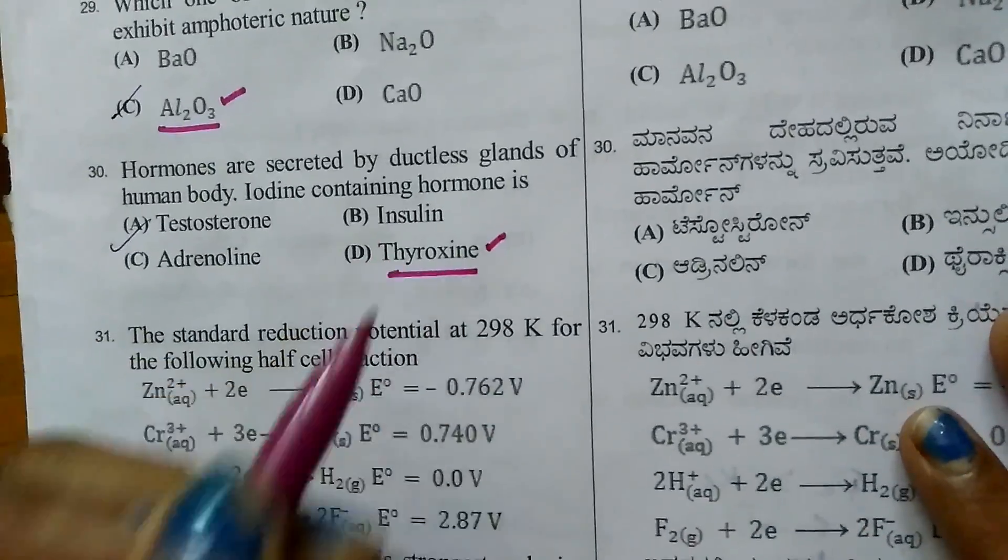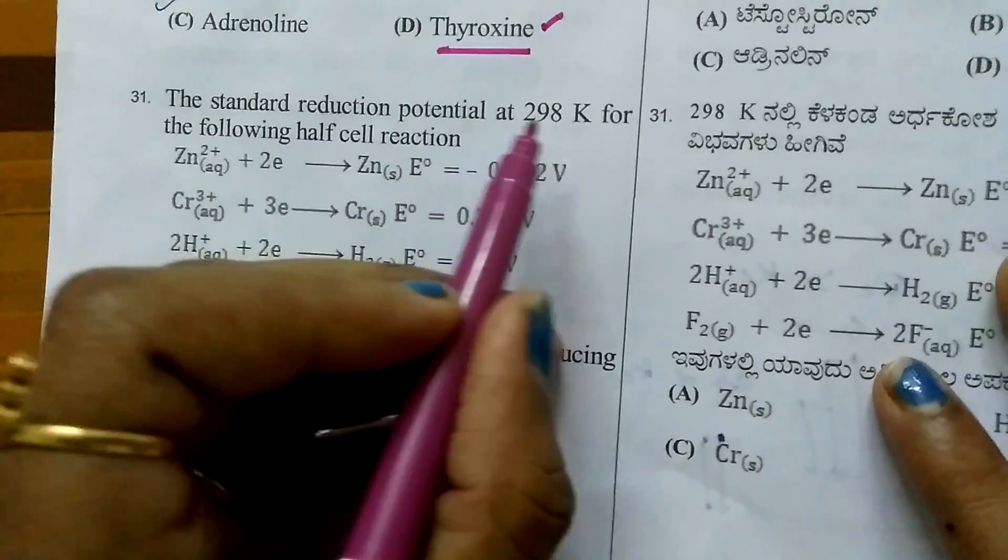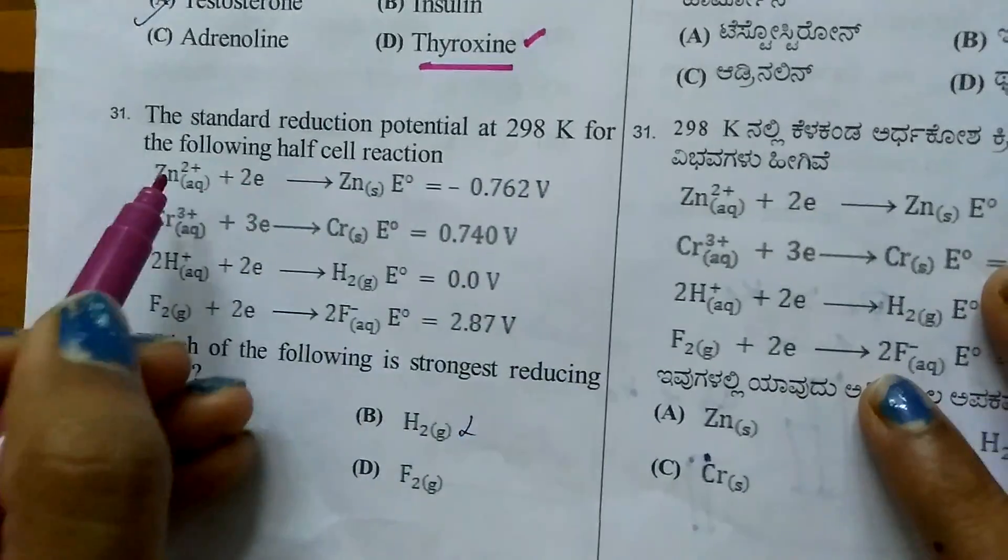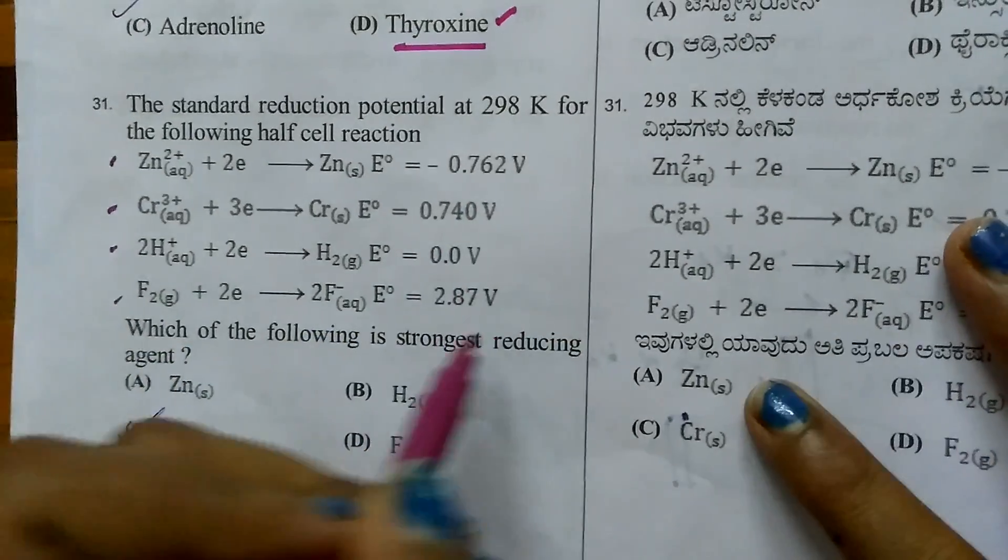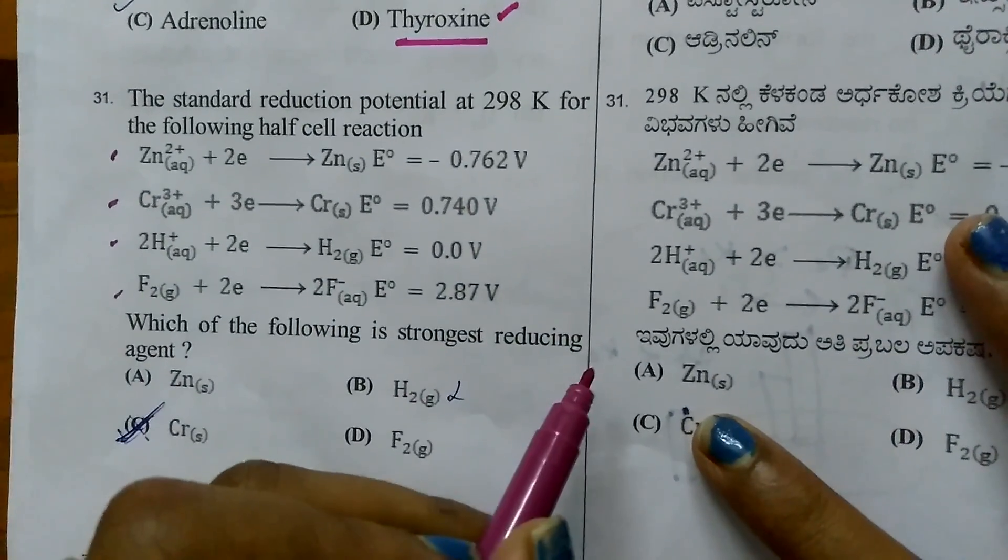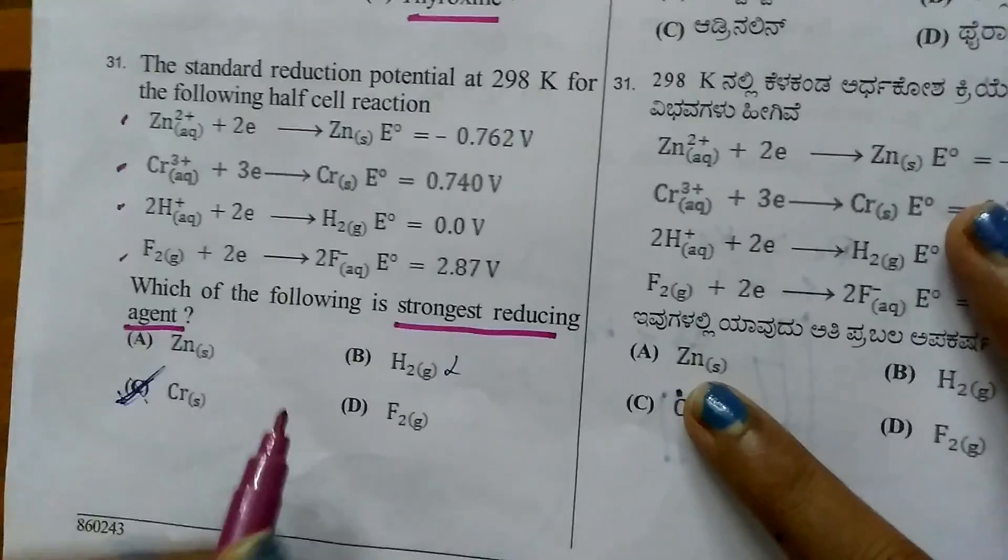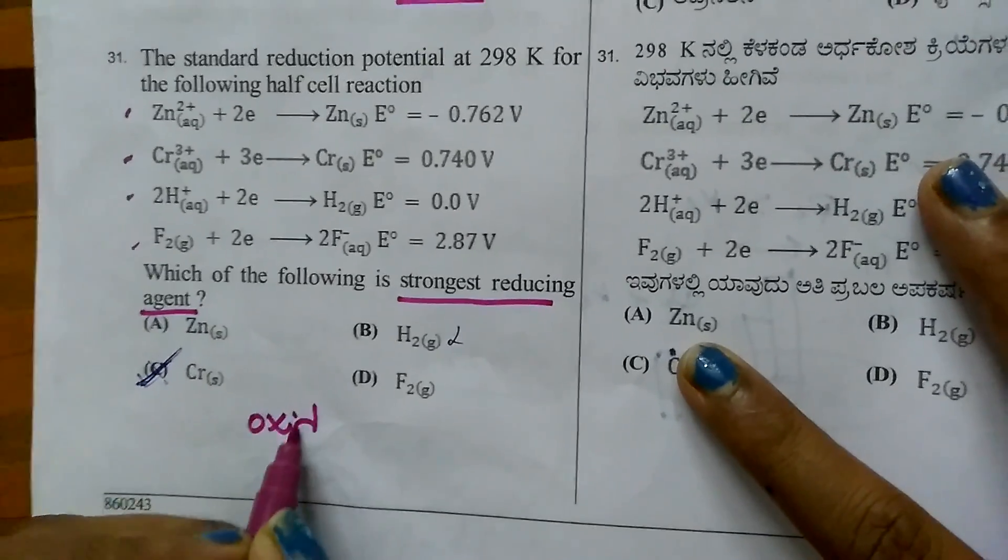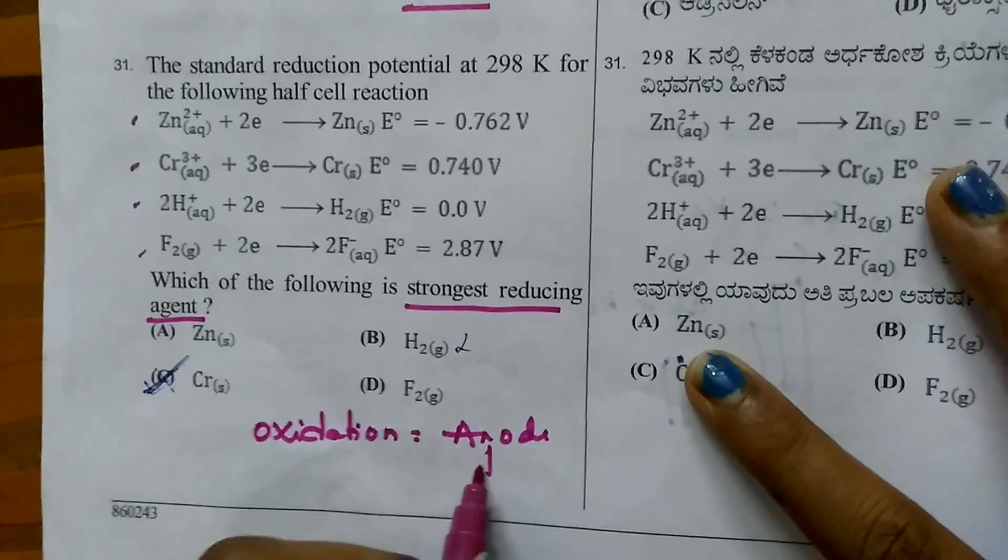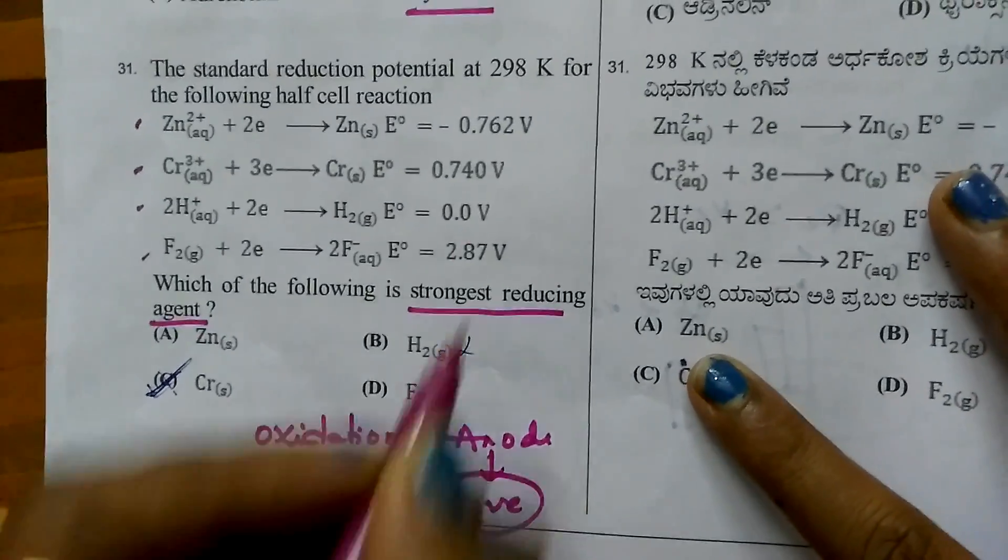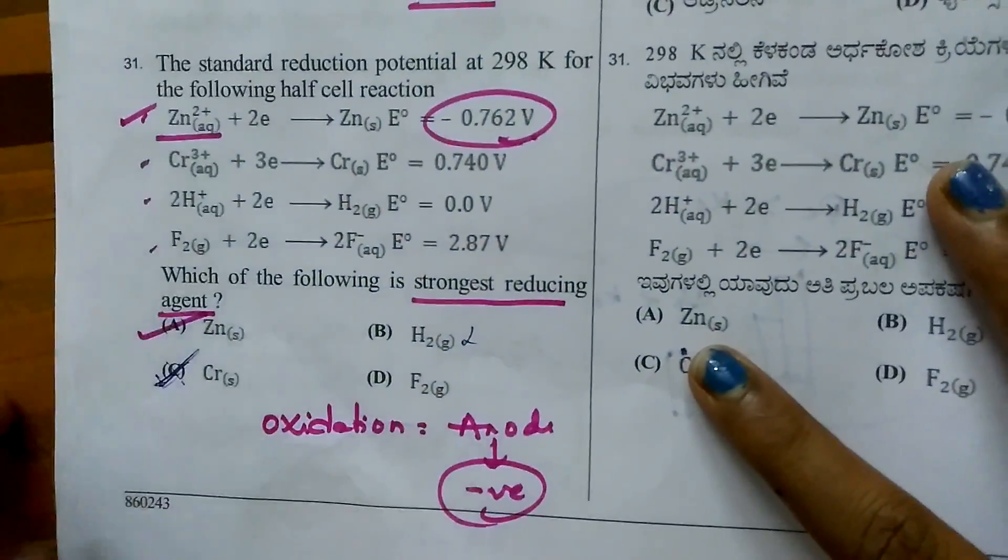Question 31. Standard reduction potentials at 298 K for half cells are given. Which is the strongest reducing agent? Strongest reducing agent undergoes oxidation at the anode with more negative value. Among these four, zinc has the most negative value, so the answer is zinc.